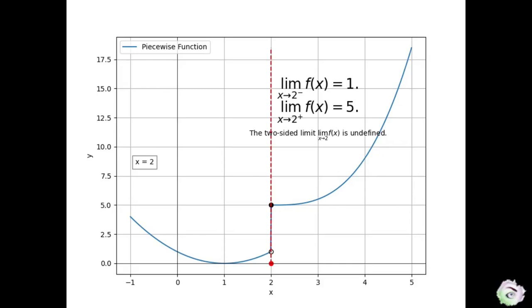The graph appears to intersect the vertical line at two points, specifically at the open dot and the closed dot above the red point at x equals 2. However, according to conventions, the open dot does not belong to the graph and therefore does not count. The graph only intersects the vertical line at the closed dot, whose y-coordinate is 5.